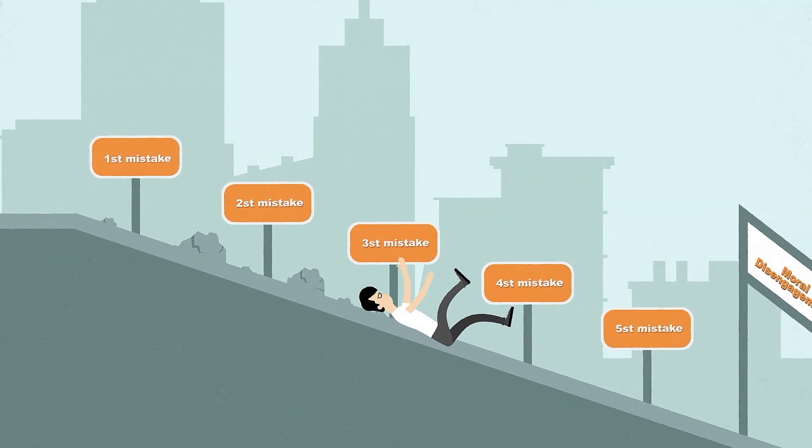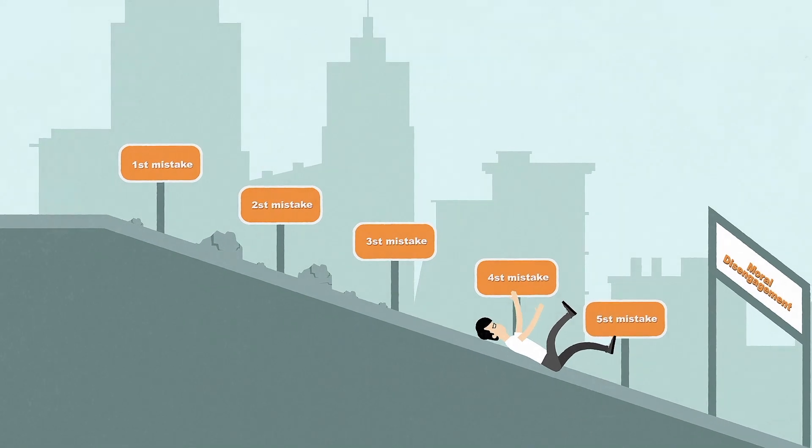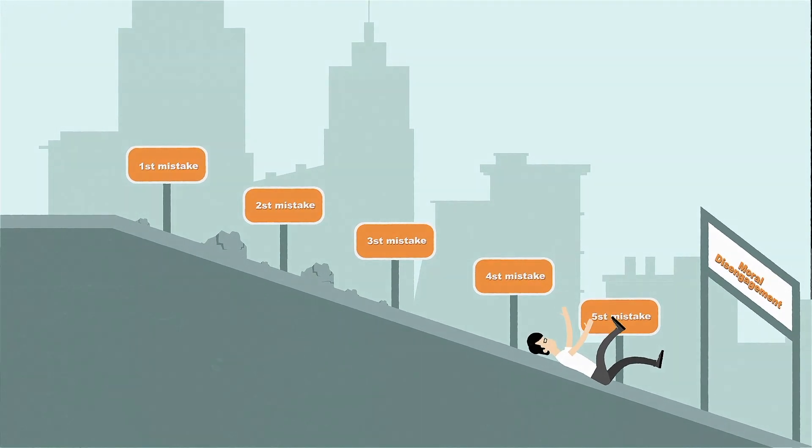At some point on the slippery slope, John will become morally disengaged by having reframed the situation so often that he will no longer perceive an unethical act as unethical.